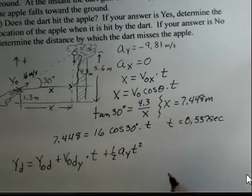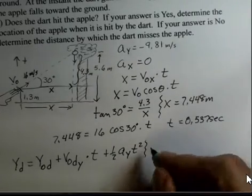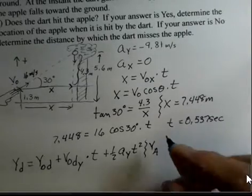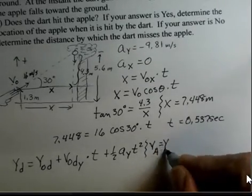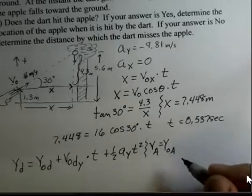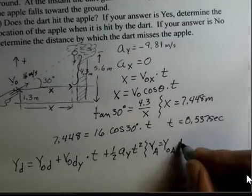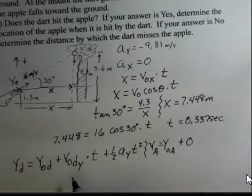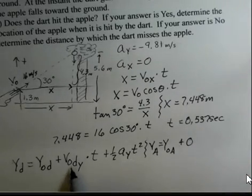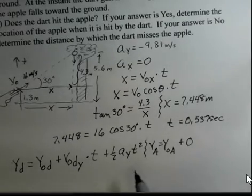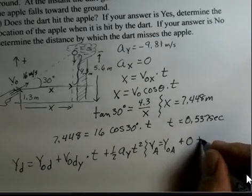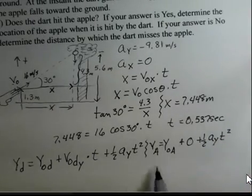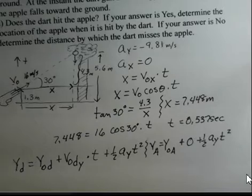So the d subscript stands for dart. For the case of the apple, the final position of the apple, or the position at time t in the Y direction, is equal to the initial position of the apple plus zero. The apple is starting from rest. So in this term, where we use the initial Y velocity, that's going to be a zero for the apple, plus one half a_y t squared. So that's the Y equation for the apple.